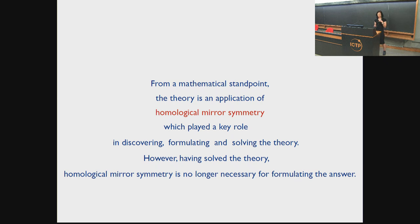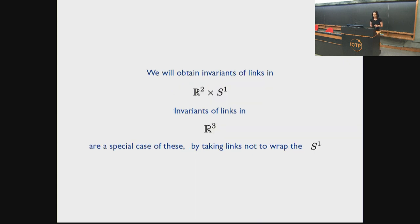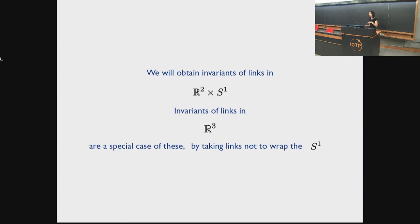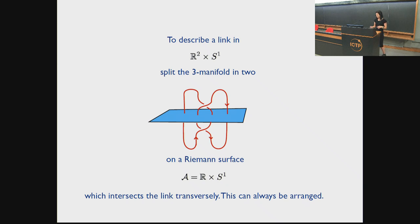We'll get invariants of links in R² × S¹. From them, you get invariants of links in R³ as a special case by simply not considering links that wrap around the S¹. We'll describe the link in R² × S¹ by splitting the R³ manifold into two on a Riemann surface, which is an infinite cylinder — R × S¹ — where you choose so that it intersects the links transversely, which you can always arrange. Such a splitting maps the link into a pair of matchings on the Riemann surface, which has punctures where the two matchings meet, one matching coming from the top and the other from the bottom.